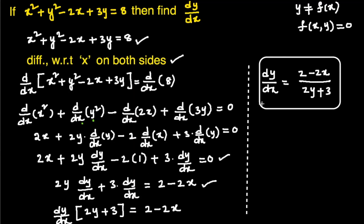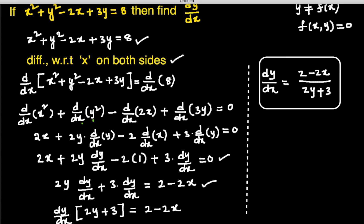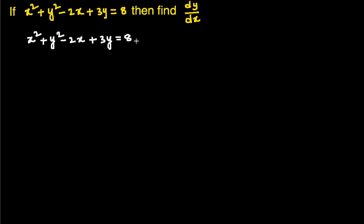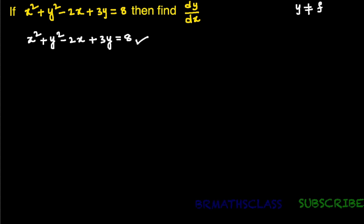If x² + y² - 2x + 3y = 8, then find dy/dx. First, we take the given equation. Observe that y is not clearly expressed in terms of x, so the equation is not in the form y = f(x). It is in the form f(x, y) = 0, which tells us that the given equation is an implicit function.